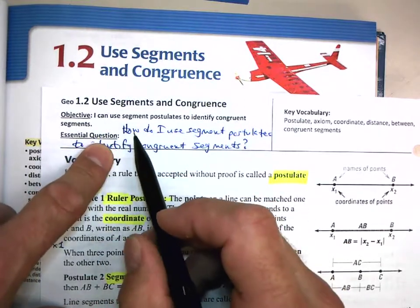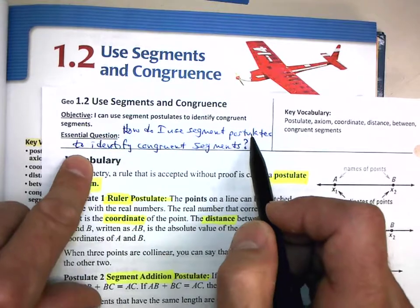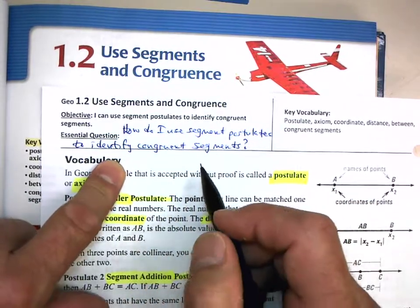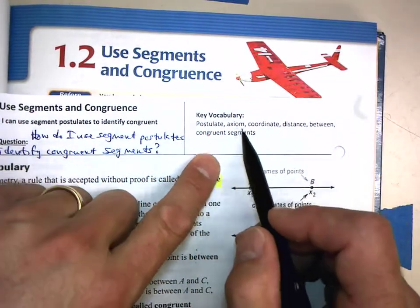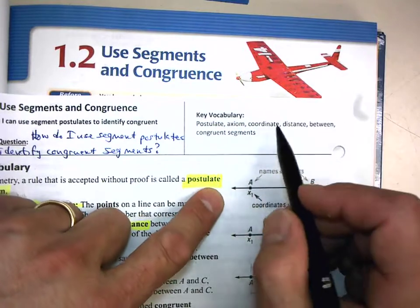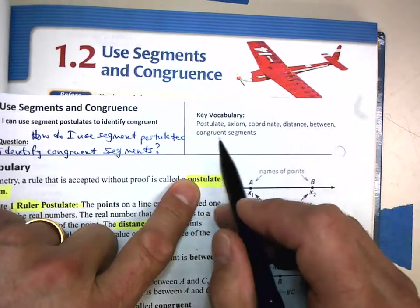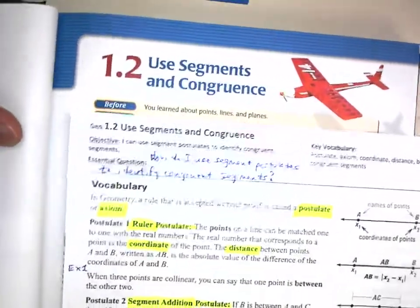Let's write our essential question: How do I use segment postulates to identify congruent segments? Our key vocabulary in this section is postulate, axiom, coordinate, distance, between, and congruent segments.